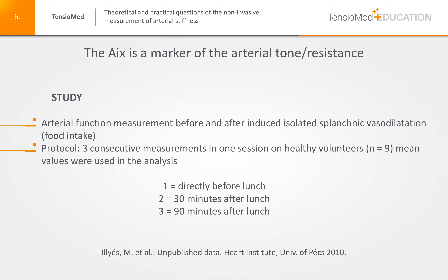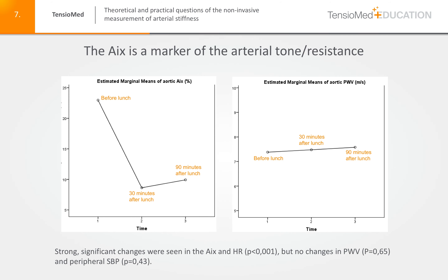To scientifically prove that the augmentation index is truly a marker and mirror of arterial tone and peripheral vascular resistance, we conducted a study in which we produced isolated splanchnic visceral vasodilatation by food intake. We measured volunteers just before lunch, 30 minutes after lunch, and 90 minutes after lunch. The results clearly show that the augmentation index sharply decreased after lunch at 30 minutes, and this reduction of the augmentation index was maintained even at 90 minutes after lunch. Thus, the reduction in augmentation index reflected the marked and significant visceral splanchnic vasodilatation.